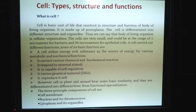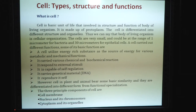It produces itself. Cells in plant and animal bear some basic similarities and they are differentiated into different forms for functional specialization. Cells are a complex structure. On the basis of complexity, it is divided into two categories: prokaryotic cell and eukaryotic cell. There are three basic principal components of cells, which are cell membrane, nucleus and its chromosomes, and cytoplasm and its organelles.